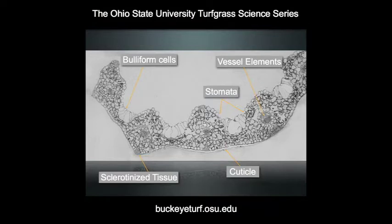Then we have the vessel elements. These are what transport water up and nutrients and other assimilates down through the leaf and throughout the leaf tissue. The parts that are of primary importance to us when we talk about foliar fertilization are the stomates and the cuticle.